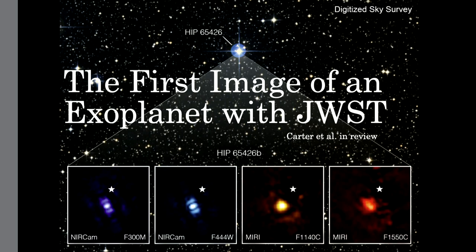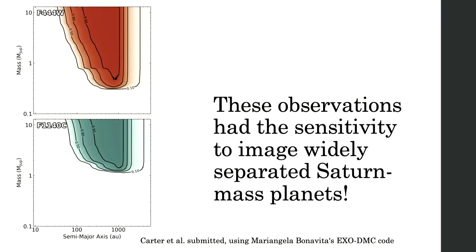There's a lot more to find. This dataset has extreme depth — especially at 4.4 microns, we're getting down to the sensitivity where we could potentially image widely separated young Saturn-mass planets. In the next 10 years, I expect we'll probably have a handful of these. We also have the sensitivity to detect maybe one or two radial-velocity-detected planets with JWST in the next few years.